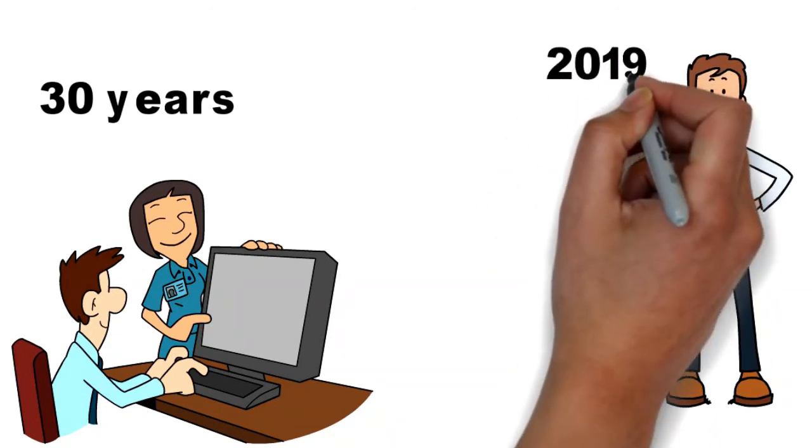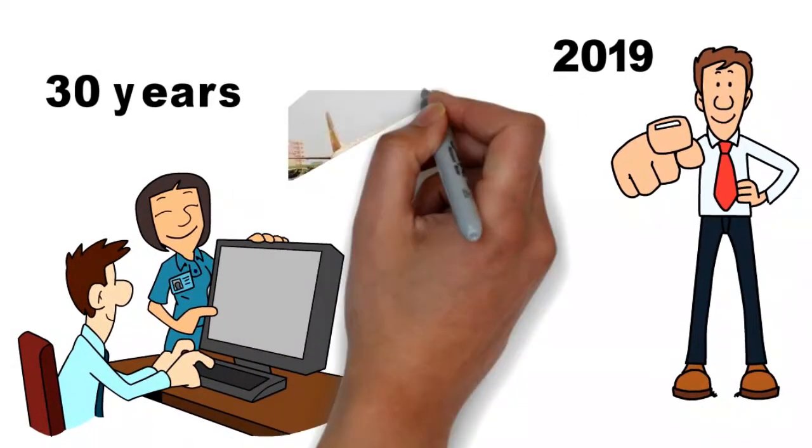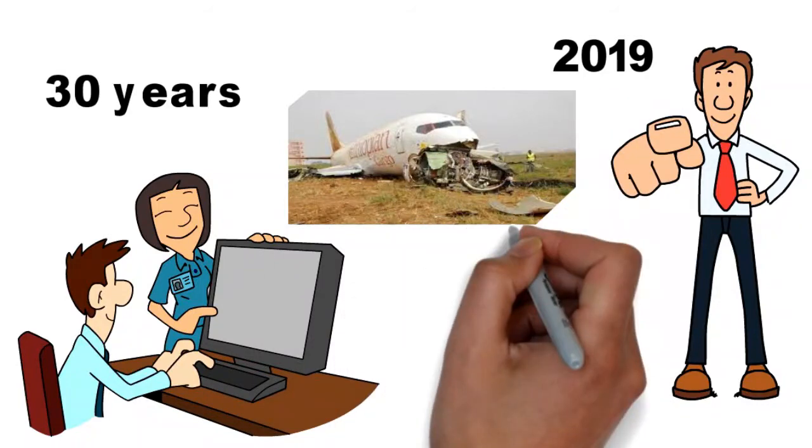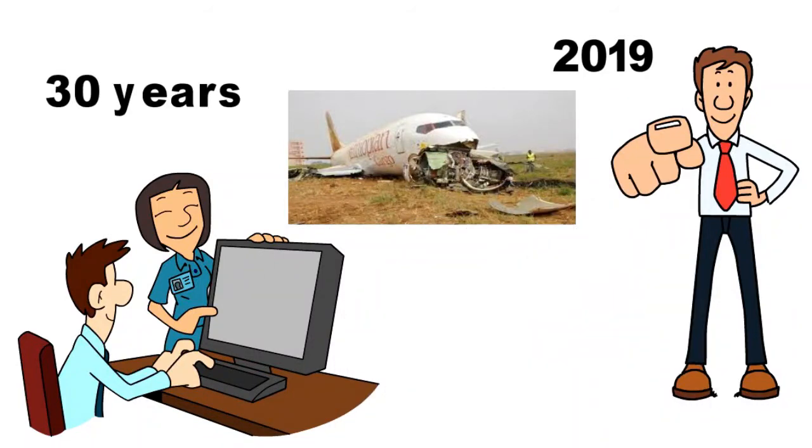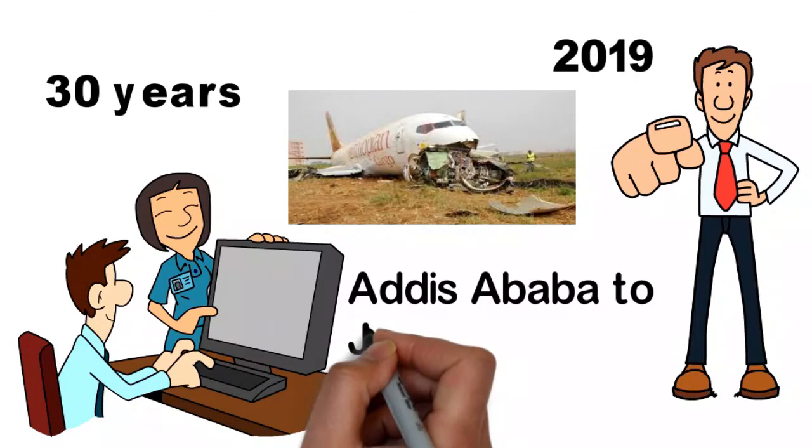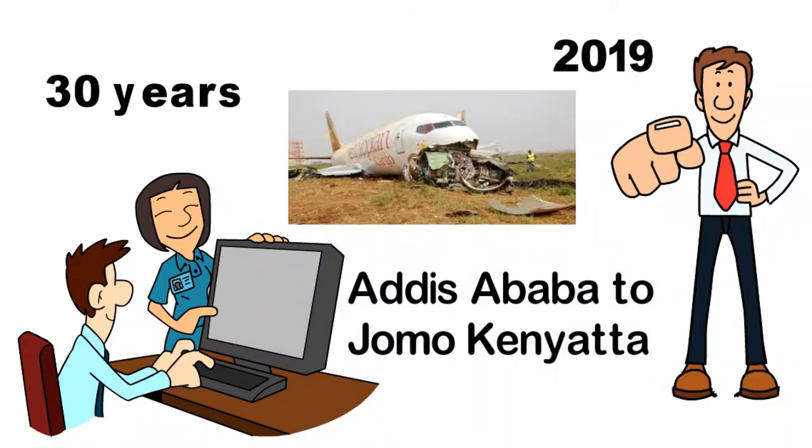Let's take an example. In March 2019, the Ethiopian Airlines Boeing Max 737 airplane, which took off from Addis Ababa to Jomo Kenyatta, crashed. Four and a half months earlier, in October 2018, the same airplane model of Lyon Air also crashed.